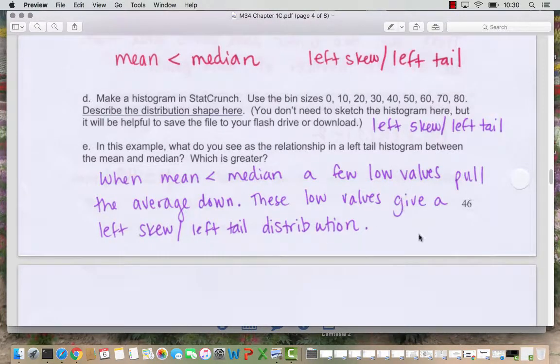So we have this relationship in general when the mean is less than the median. A few low values pull the average down and these low values give a left skew or a left tail distribution.